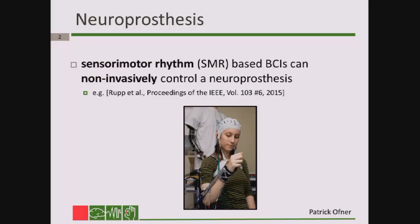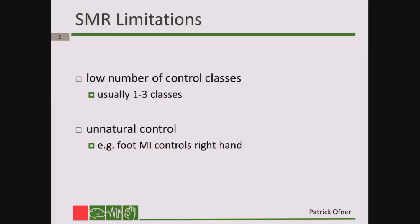Sensory motor rhythm-based BCIs have two main limitations. First, they only support a low number of control classes, usually one to three classes. And second, the control of such a BCI is somehow unnatural. For example, a foot motor imagination is used to control the right hand, or the left hand imagination is used to control the right hand. This is clearly unnatural.